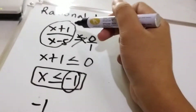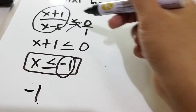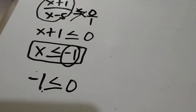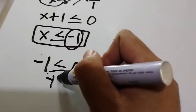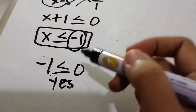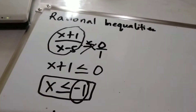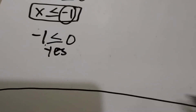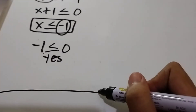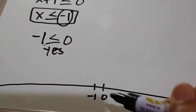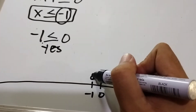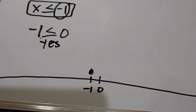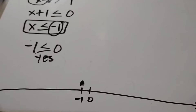So negative 1 — the rational expression gives us negative 1, and the inequality is less than or equal to 0. Is it true that negative 1 is less than or equal to 0? The answer is yes. It means that negative 1 is included in our given inequality. So on a number line, at negative 1, we will put a closed circle to indicate that negative 1 is included in our possible value of x.